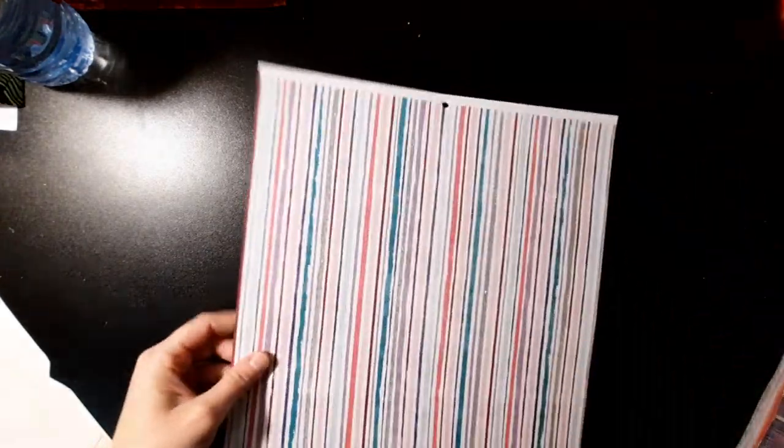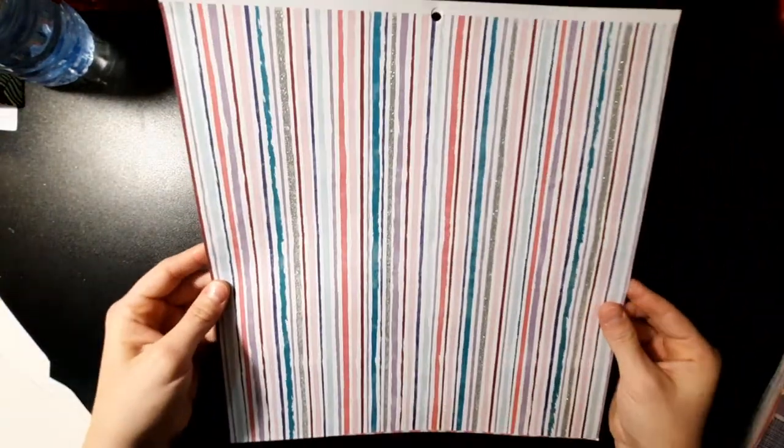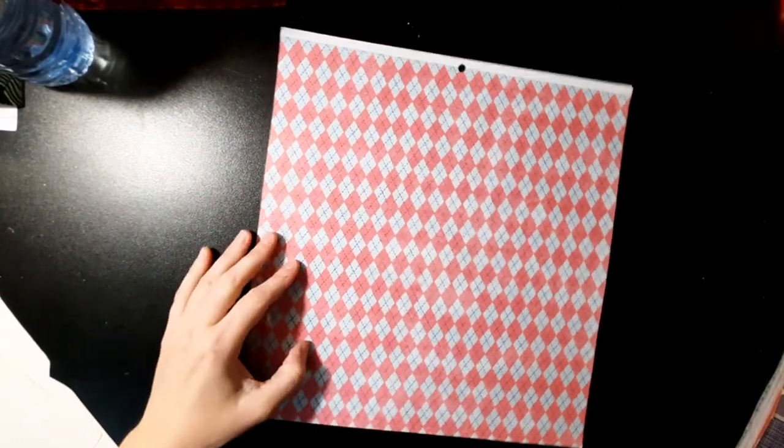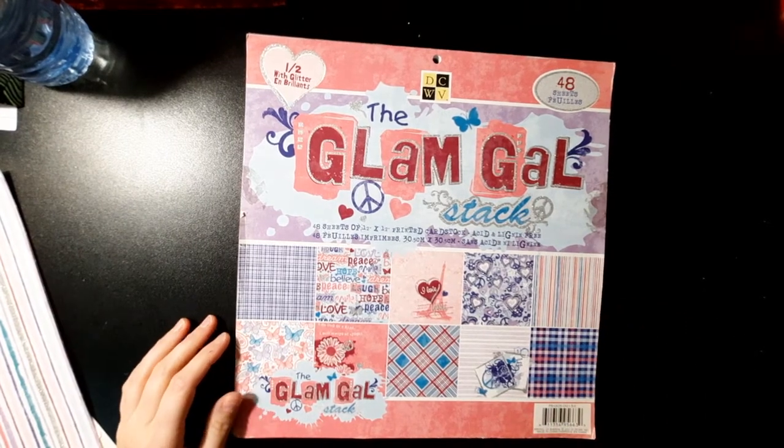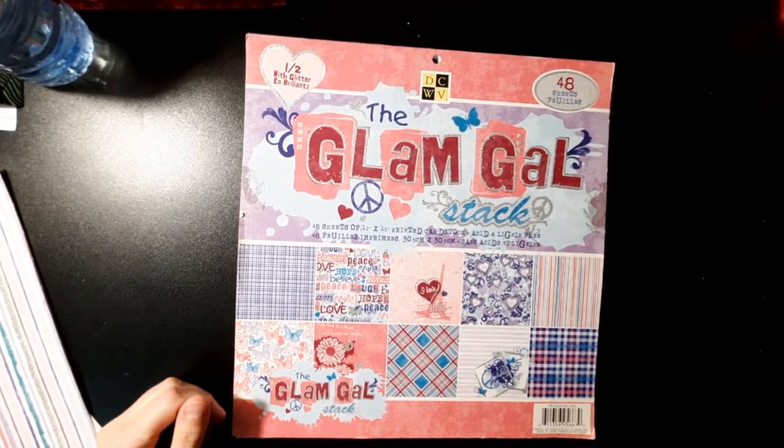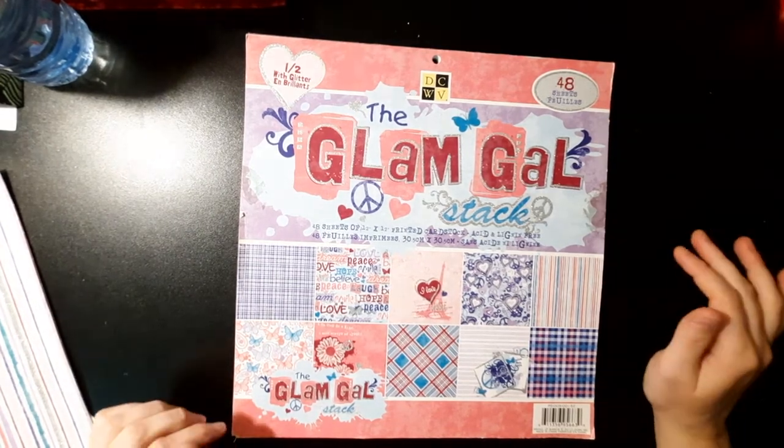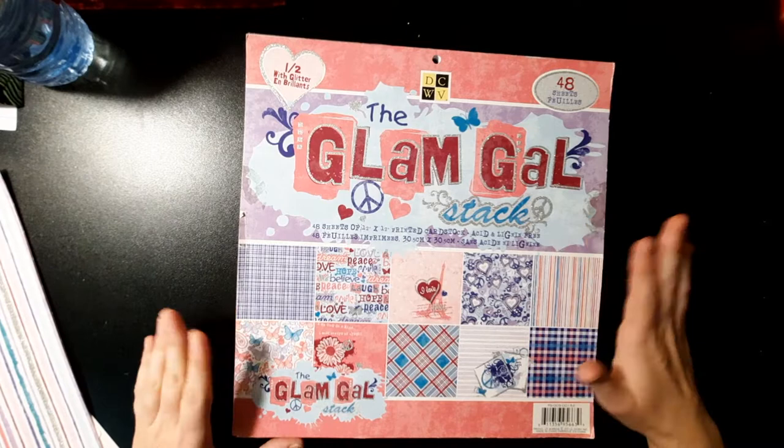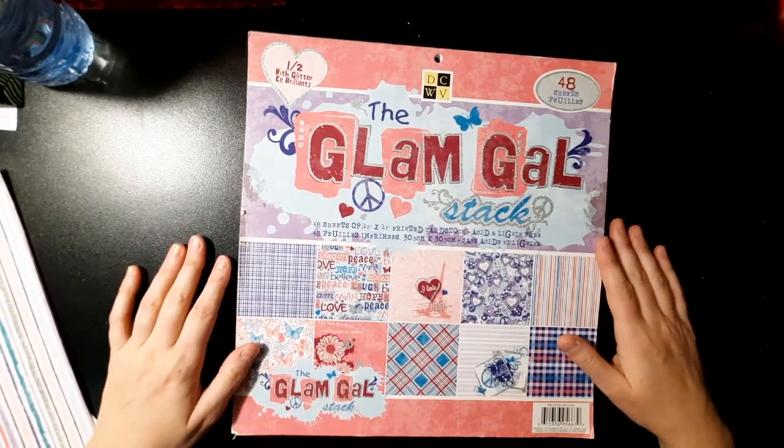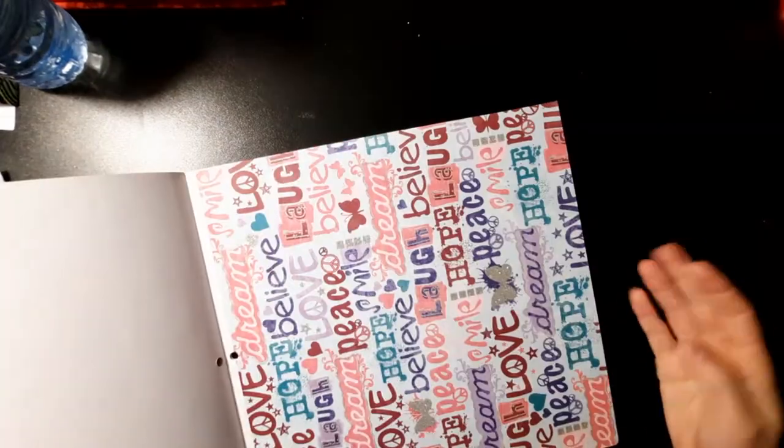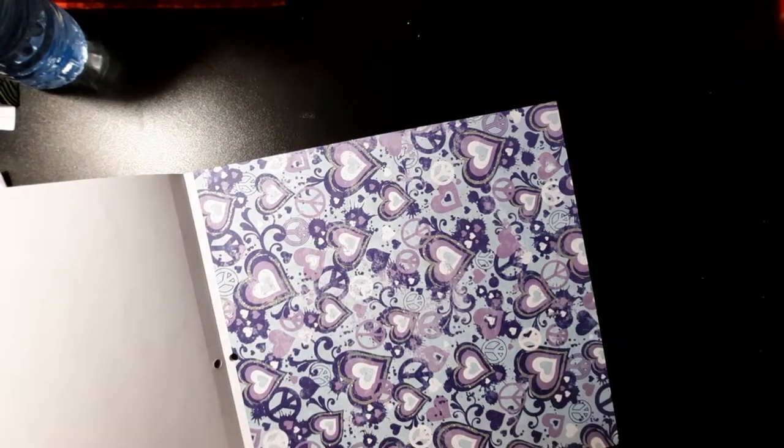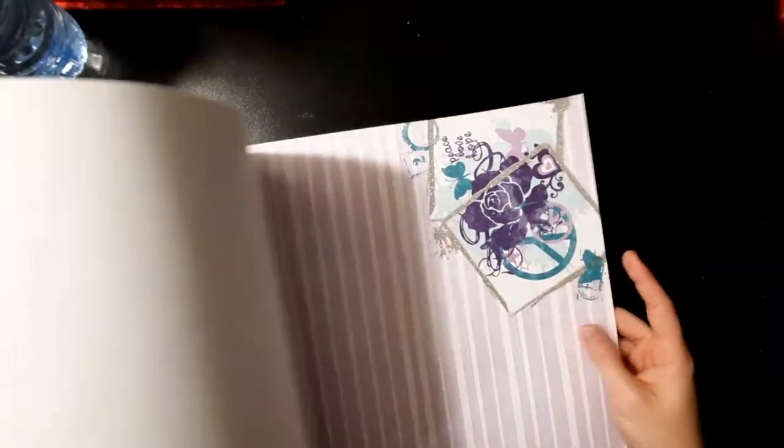I'm going to be using this striped one here that has a little bit of glitter in it, which is really cool, and this argyle print. So I think these will look really neat as envelopes. I pulled them out of this paper pad pack, the Glam Gal stack. Not something I would have ever purchased on my own because it's not really my style. However, I did get it at a thrift store for $2. So I mean, how can you say no to that? And there are some pretty colorful pages in here. Very glittery, very in your face. But you can cut them and repurpose, and for the sake of an envelope, it's pretty cool.